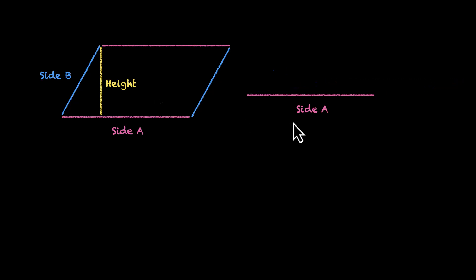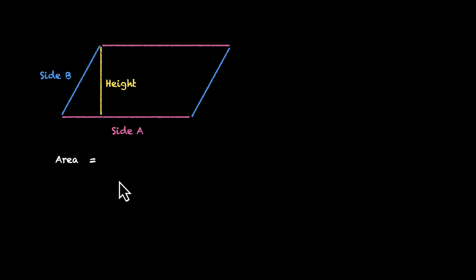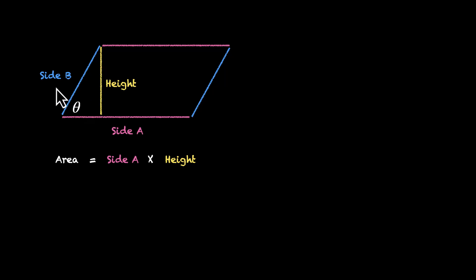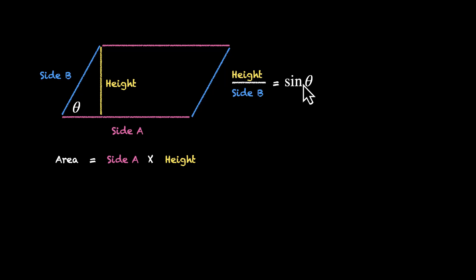So let's clean this up. If I give you side A and height, can you now find the area? Yes, there's a formula: area equals side A times height. Now if you don't know the height but you know the angle, can you still find the area? Yes. Because in this triangle, side B, height, and theta are related. Height divided by side B equals sine of theta. So if you know side B and theta, you can figure out the height, and once you know the height, you can figure out the area.